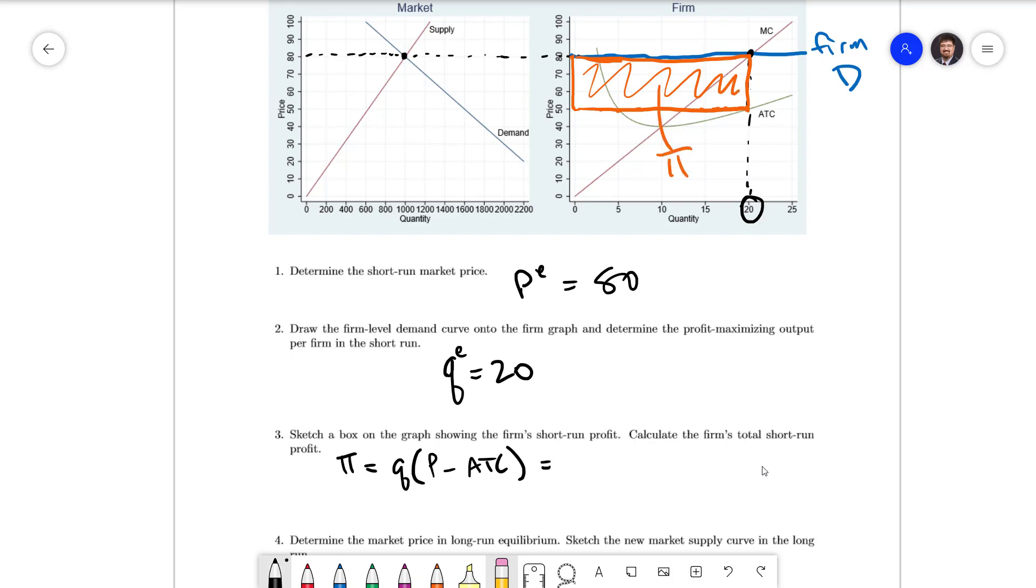To calculate that we'll plug in all our numbers: quantity of 20, price of 80, and an average total cost of 50. That's going to come out to 600.